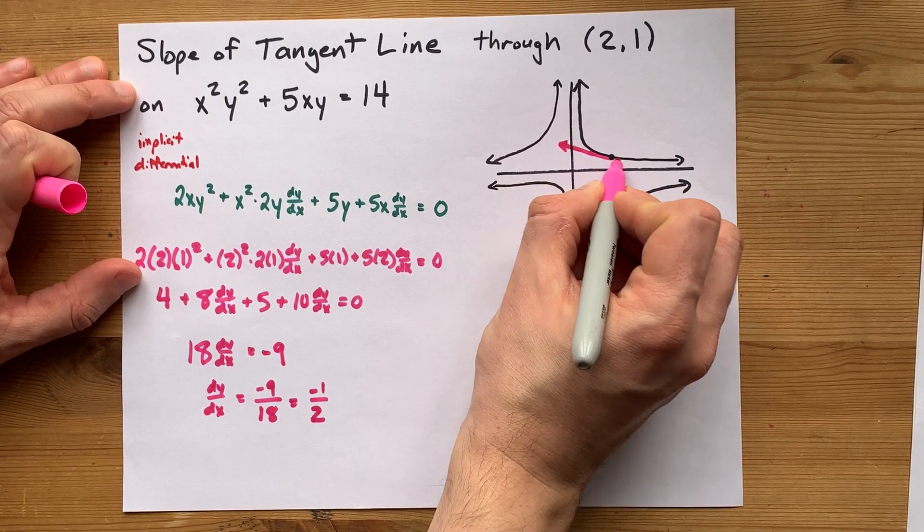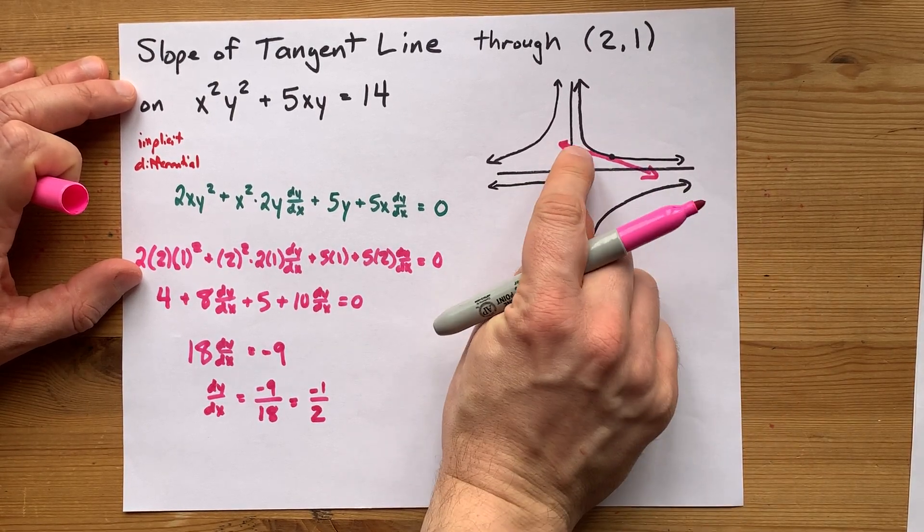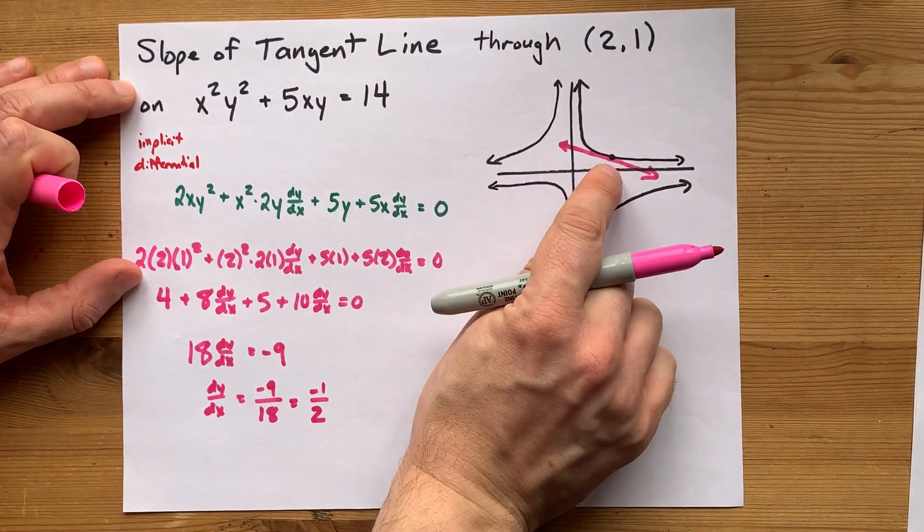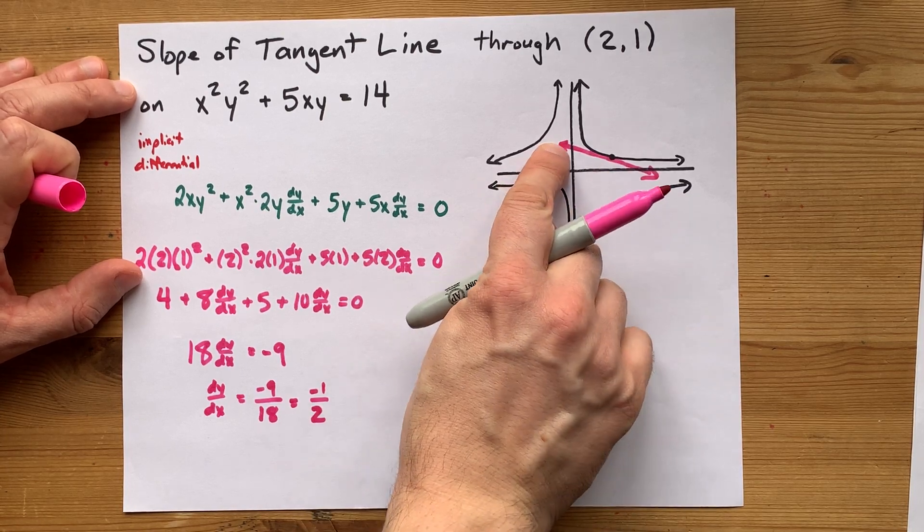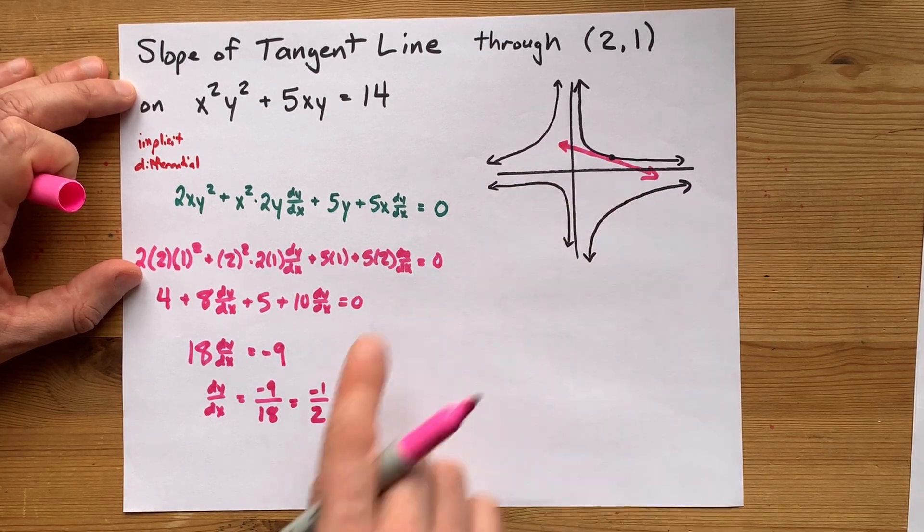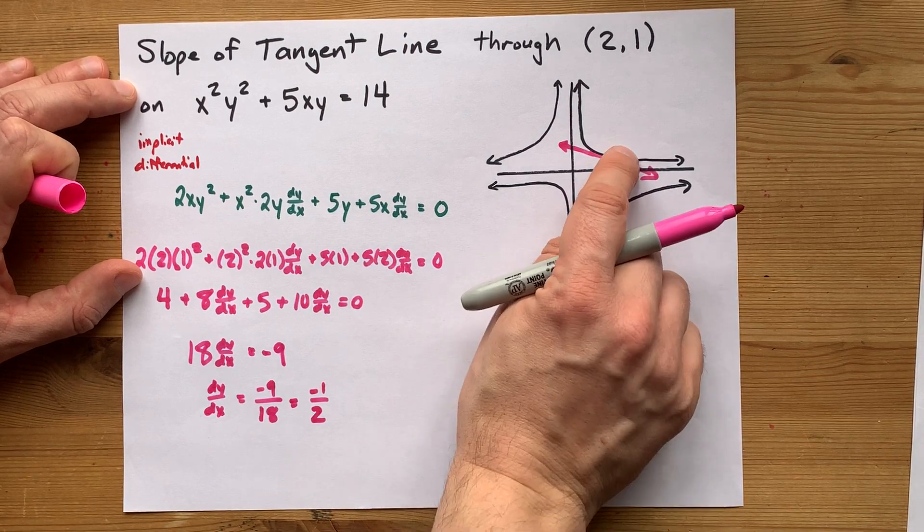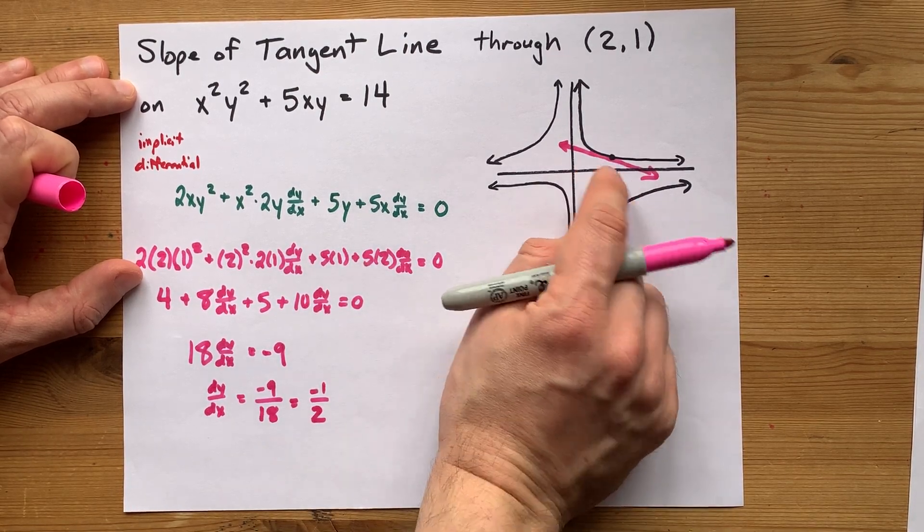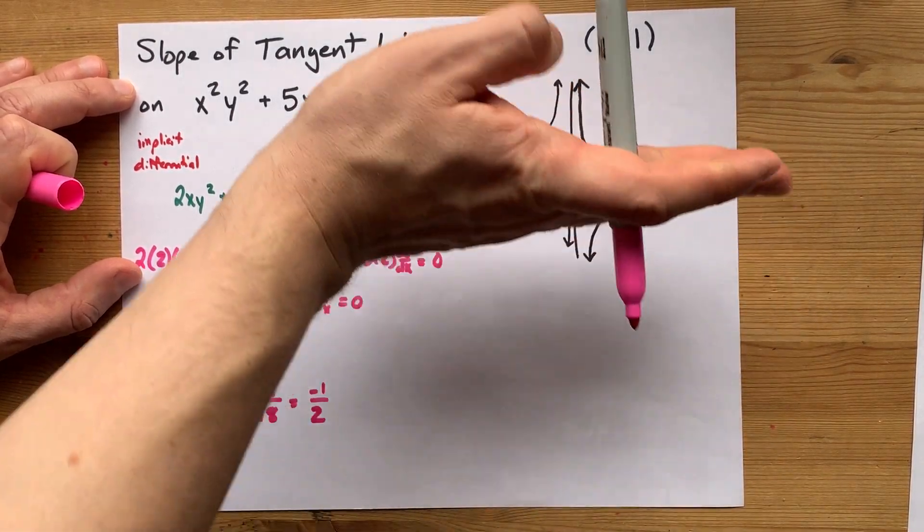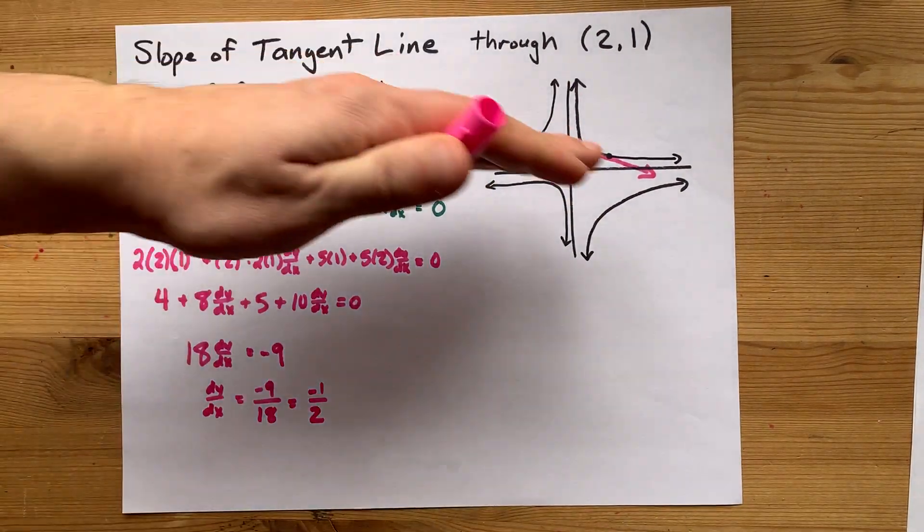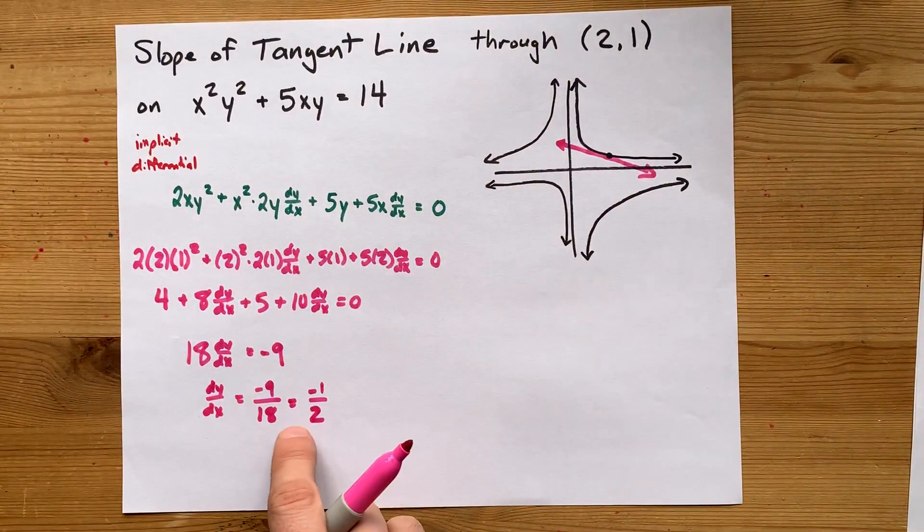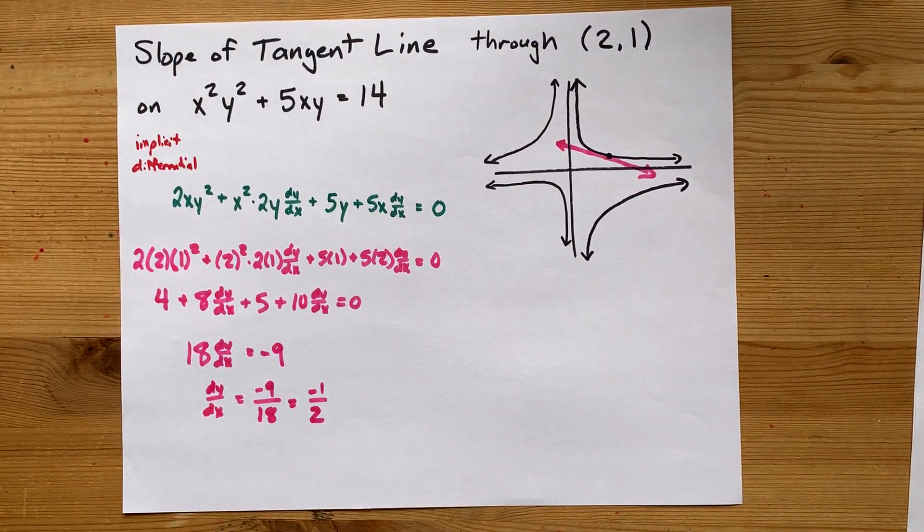And to be completely honest, it kind of looks like it. If I was going to draw a line that just barely grazed the curve at that point, it's kind of going down and to the right. So it's negative. Like the slope is negative, I mean. And it's kind of shallow. Like it's not a deep curve. It's not a steep line. So I kind of expected it to be some small fraction.